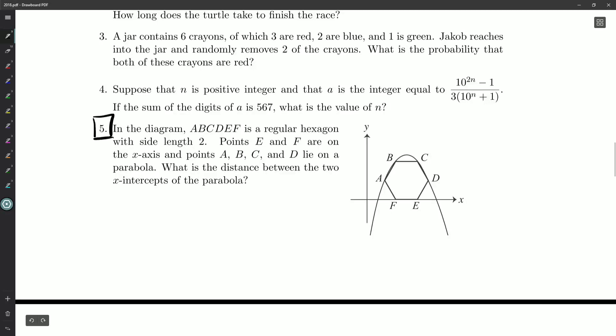But what have we got? In the diagram, ABCDEF is a regular hexagon with side length 2. Points E and F are on the x-axis. Points A, B, C, and D lie on a parabola. Oh, interesting. What is the distance between the two x-intercepts? So these two zeros down here of the parabola.